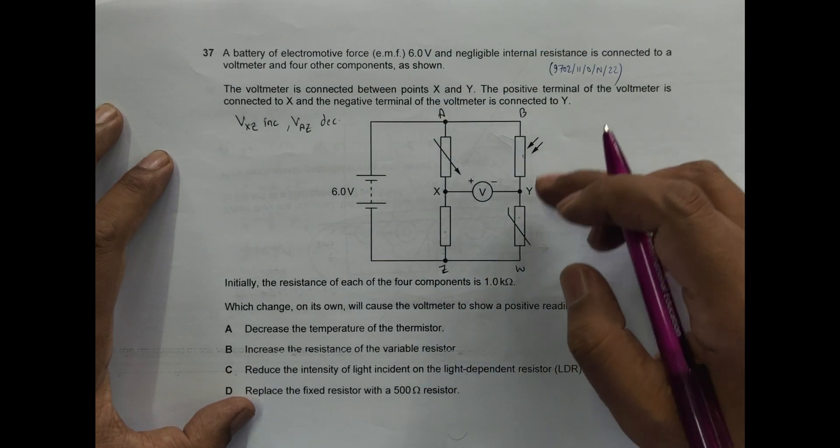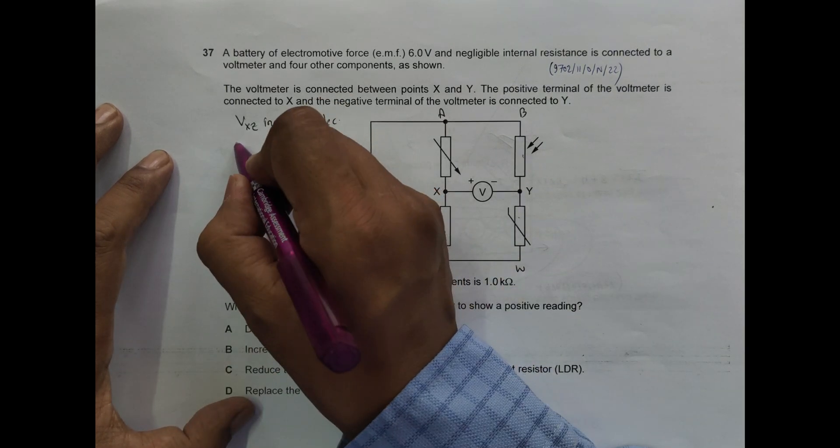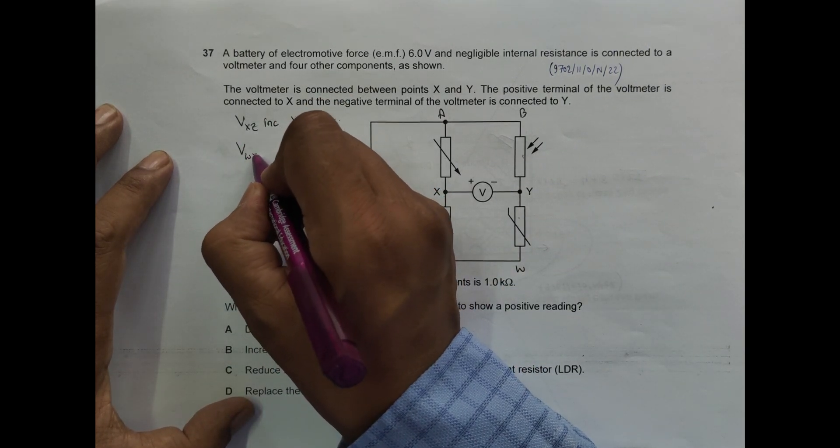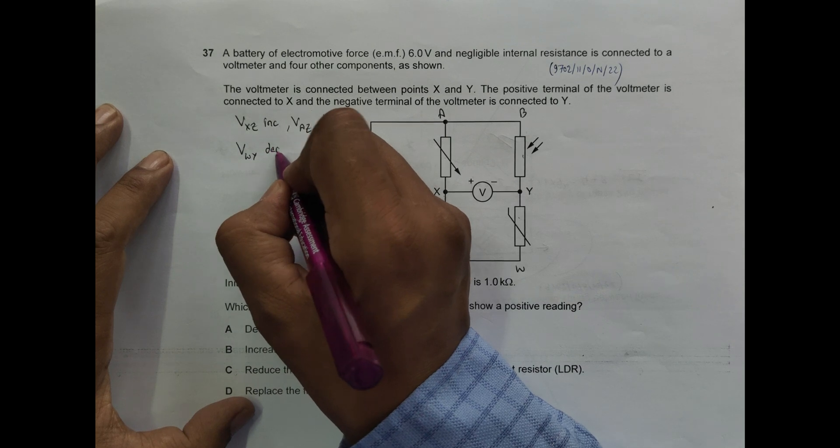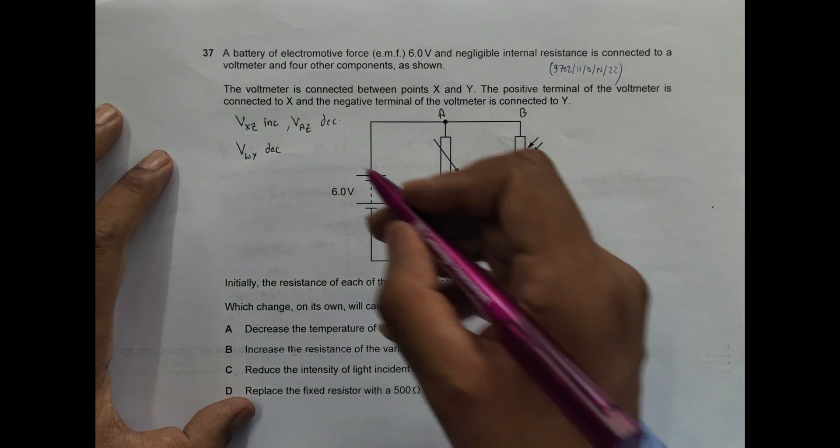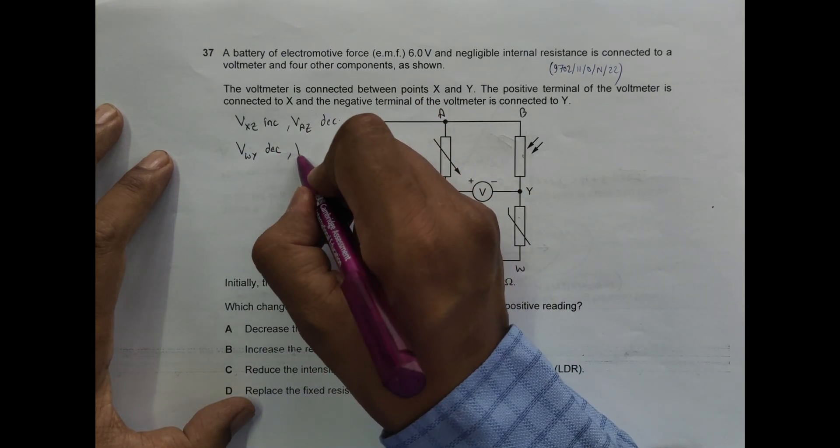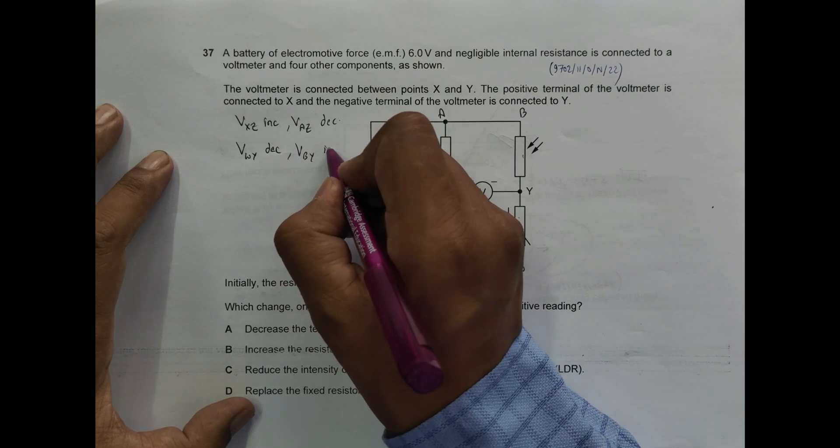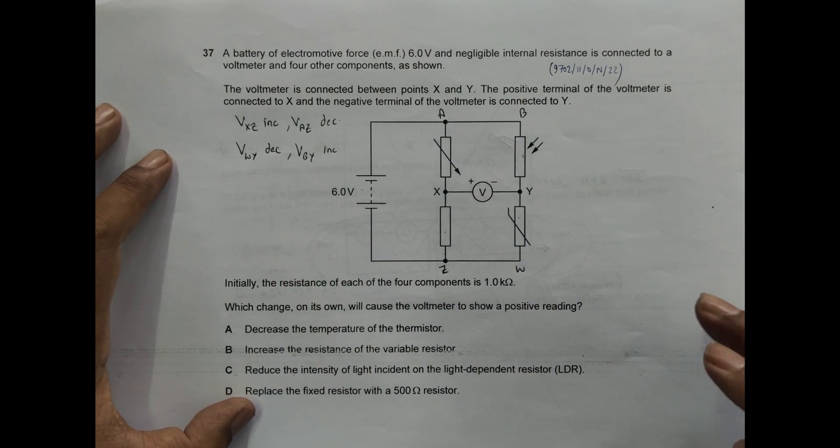In here, what we must have is Vwy should decrease because it has to decrease here from zero, and Vby should increase, Vby should increase. So this is the requirement here.